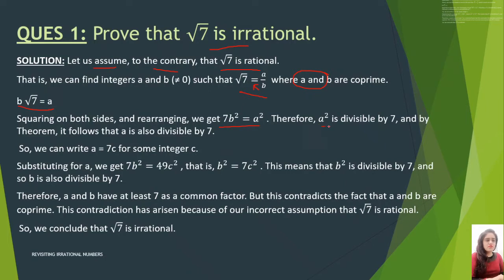Here A squared is divisible by 7, so that means A is also divisible by 7. For this type of question, you will take A as 7 times C, where C stands for some integer. So let A equal 7C. Now put this value of A into the equation.